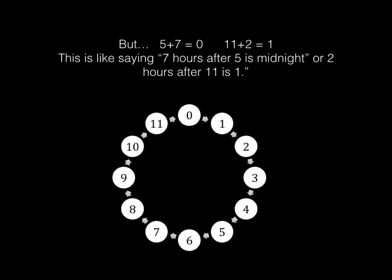This is like saying 7 hours after 5 is midnight. So we do this kind of arithmetic when we tell time. 7 hours after 5 is midnight, or 2 hours after 11 is 1, because after 11 you get midnight or noon, and then you restart with 1 o'clock.